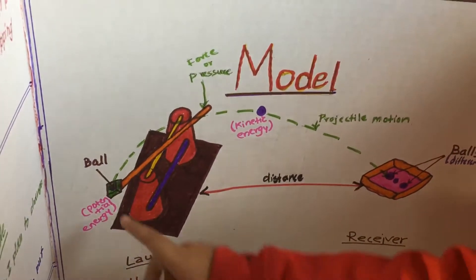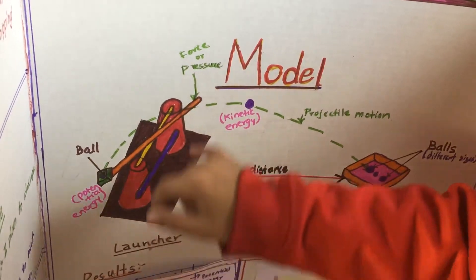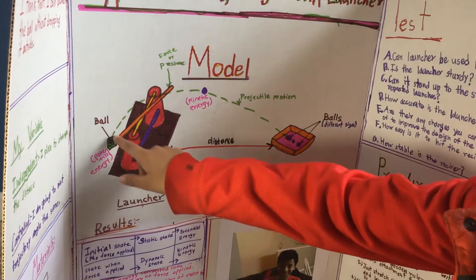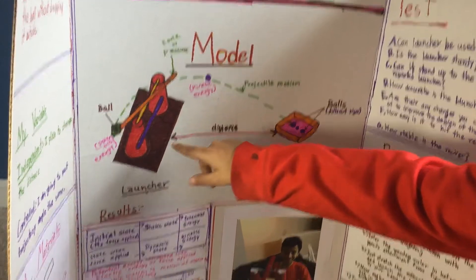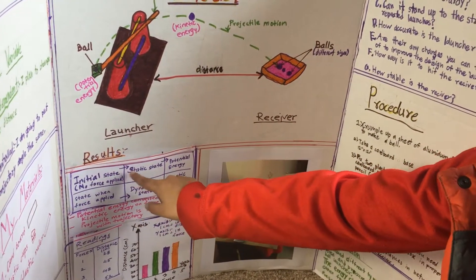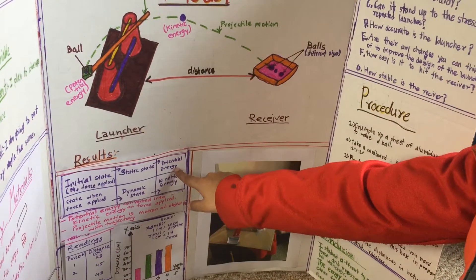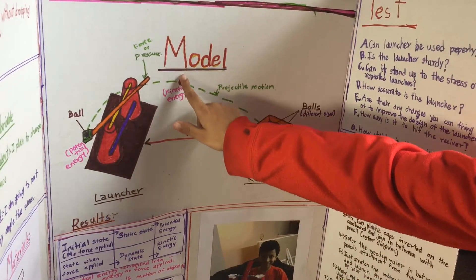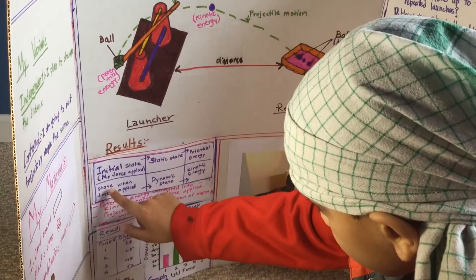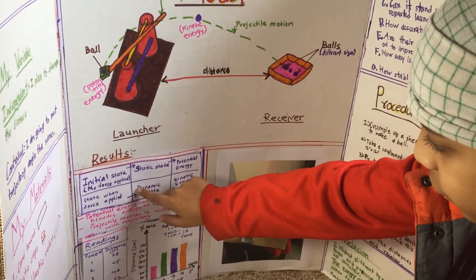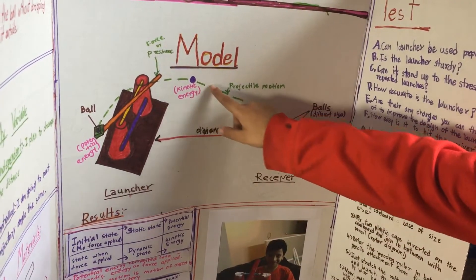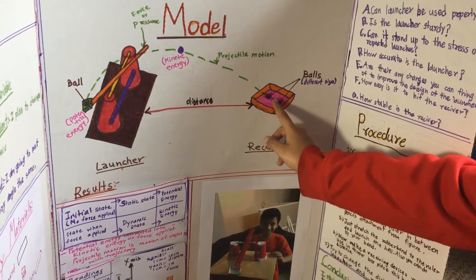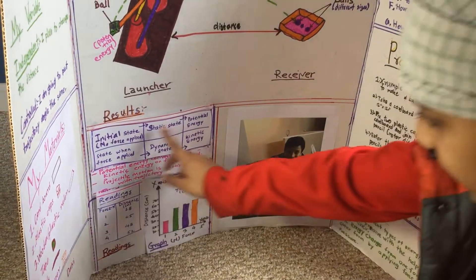Here is the procedure. This is how my model looks in actual. The ball starts here — that's potential energy, which is the initial state, also called static state. When I put pressure on the ruler, the ball goes into kinetic energy — force is applied, moving into dynamic state.